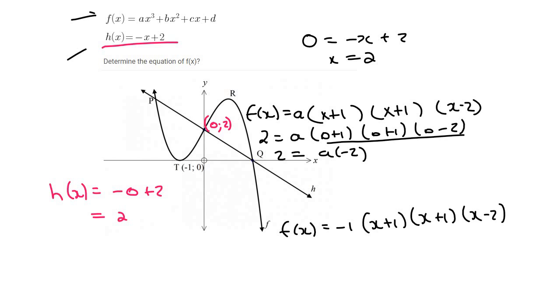To make it look like f(x), I would have to multiply everything out. So I'm going to leave the -1 in the front, and I'm going to multiply these two together. That would give me x²+2x+1. And then I've still got an x-2.